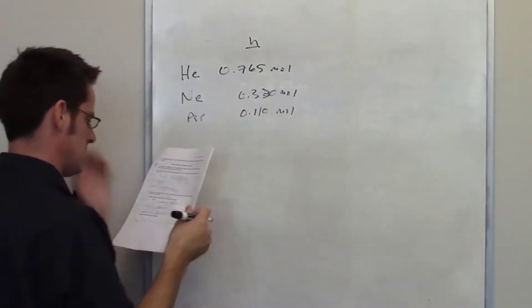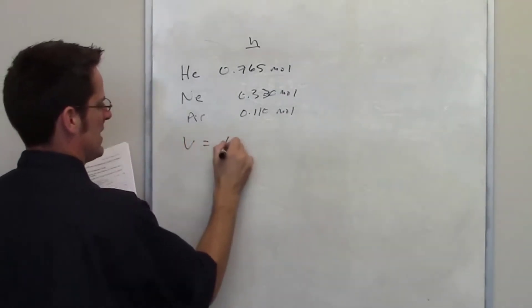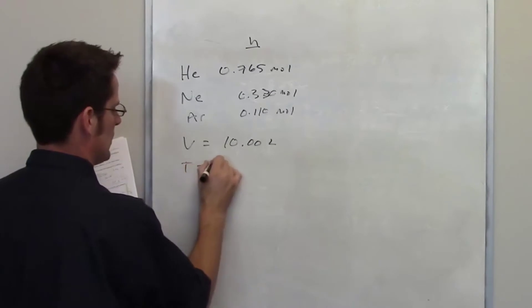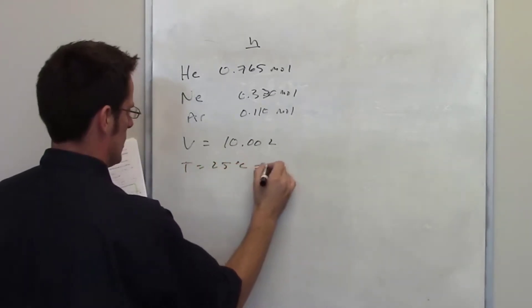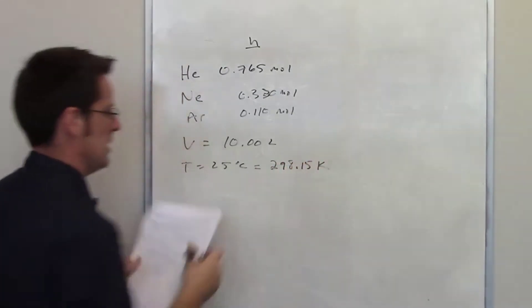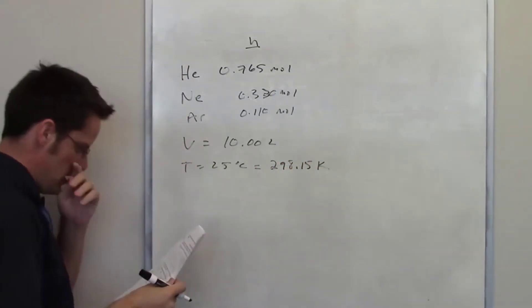I've got 0.110 moles of argon. I'm also told that the volume of the vessel that they're all confined in is 10 liters, and the temperature is 25 degrees Celsius, which happens to be 298.15 kelvins. So I'll just go ahead and make the jump to kelvins there.